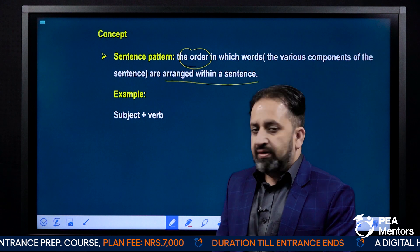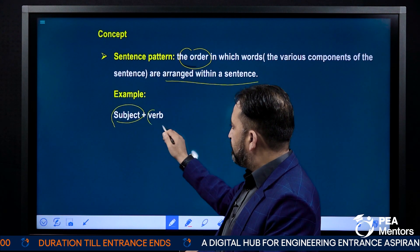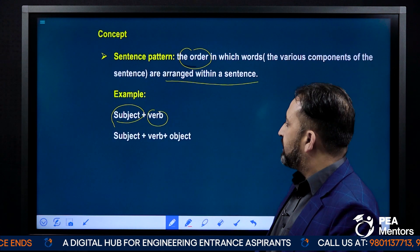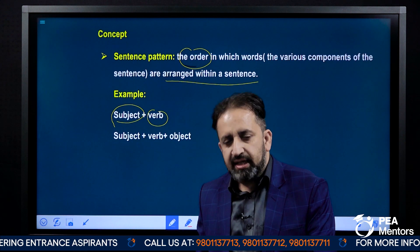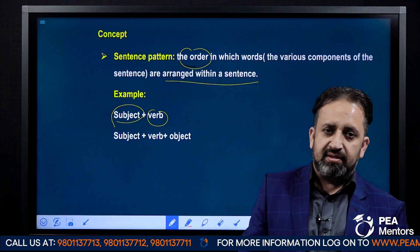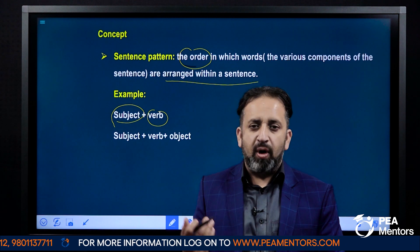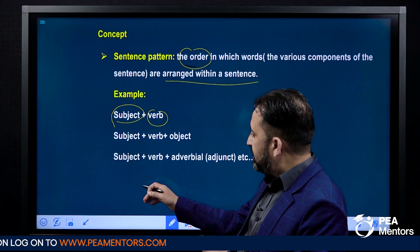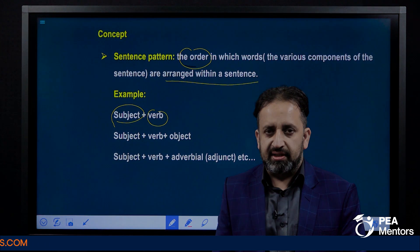For example, a sentence may have a subject and a verb — this can be one of the patterns. Similarly, a sentence may have a subject, a verb, and an object. And in a similar way, there are various other sentence patterns, and we'll talk about all these patterns one by one. Some sentences may have a subject, a verb, and then an adverbial, which is also called an adjunct.